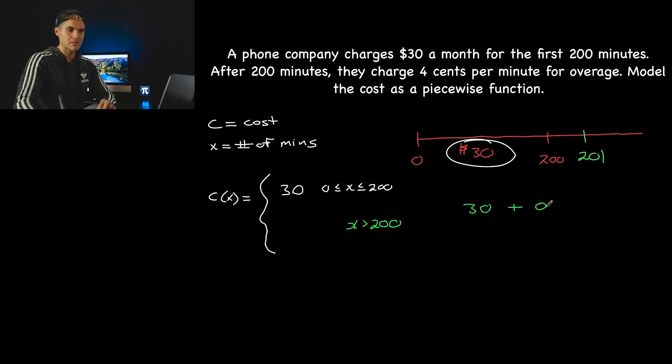Well, what we could say is you're going to get charged $0.04 for any overage minutes. How can we represent the overage minutes? We could say X minus 200 like that. Because we're trying to find out an equation here. If we know that X is going to be greater than 200, so let's say the X value is going to be 300. We talk 300 minutes.